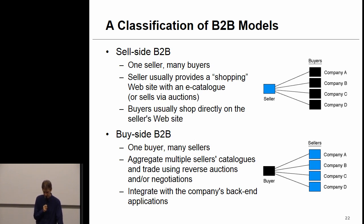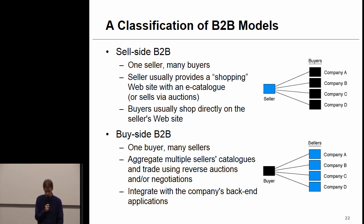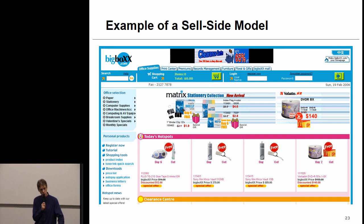In a buy-side B2B, we work the other way around: one buyer and many sellers. The buyer aggregates multiple sellers' catalogs and trades using reverse auctions or negotiations. Remember, a reverse auction is where a buyer interested in stationery material asks for quotes from various sellers and then picks the cheapest. This creates downward pressure on price — as opposed to a forward auction where there is upward pressure on price.